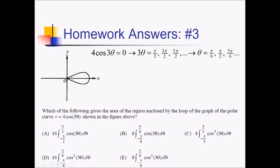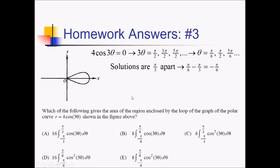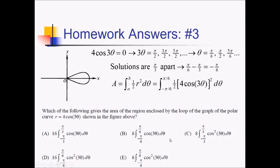We're only interested in two of these angles. This upper limit in the first quadrant is most likely pi over 6 — it definitely looks like 30 degrees. Using symmetry, the lower angle is probably negative pi over 6. To confirm, these zeros are separated by a distance of pi over 3. Going backwards from pi over 6 by subtracting pi over 3 does indeed give negative pi over 6. So our area integral goes from negative pi over 6 to pi over 6, with r equals 4 cosine of 3 theta squared times 1 half.